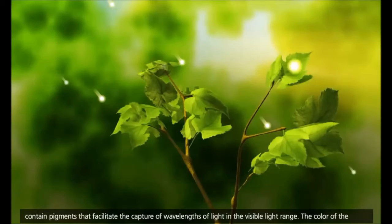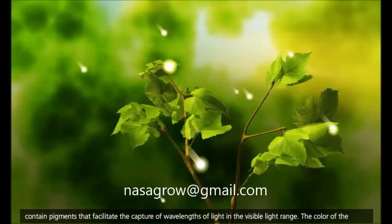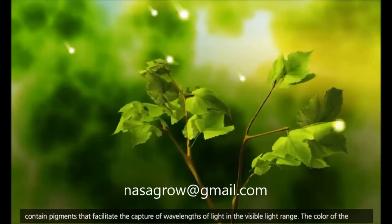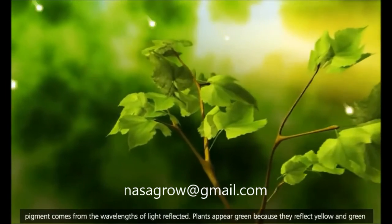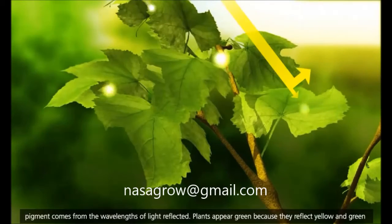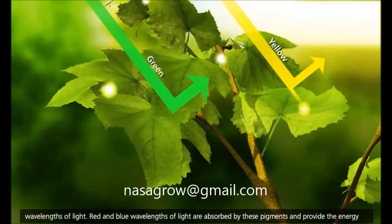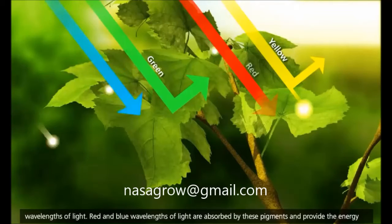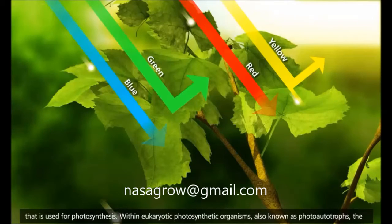Photosynthetic organisms contain pigments that facilitate the capture of wavelengths of light in the visible light range. The color of the pigment comes from the wavelengths of light reflected. Plants appear green because they reflect yellow and green wavelengths of light. Red and blue wavelengths of light are absorbed by these pigments and provide the energy that is used for photosynthesis.